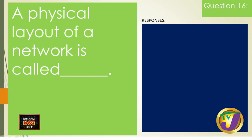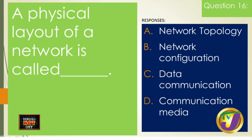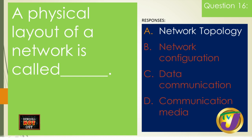Question sixteen: the physical layout of a network is called A) network topology, B) network configuration, C) data communication, or D) communication media. Some of these are complete distractors — the answer is topology. We've studied three topologies: star, bus, and ring. You need to know how they work and what happens if the connecting device goes down. At school, if all your computers are wired to a switch, that central connection point is a star topology.